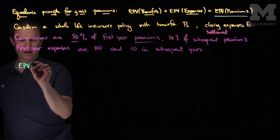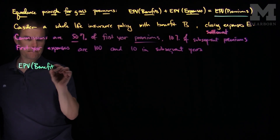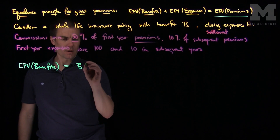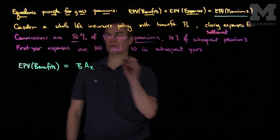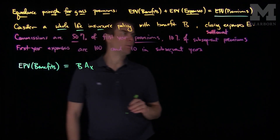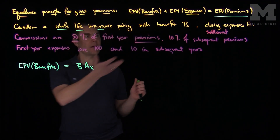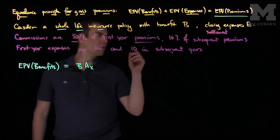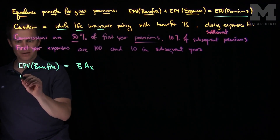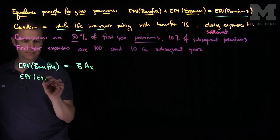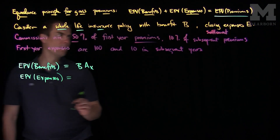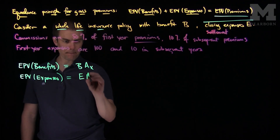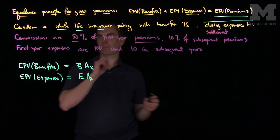The expected present value of benefits will be equal to B times A_x, because it's a whole life insurance policy paid at the end of the year of death, and that is the only benefit paid. Now we'll work out the expected present value of the expenses. There is a settlement expense of E, so it'll be E times A_x.